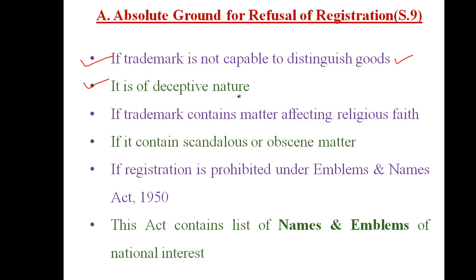A trademark should not confuse or deceive customers — customers should be capable of identifying the product they want to purchase. For example, 'Samsung' and 'Shanksang' — the minor spelling difference may mislead customers who cannot identify exactly which manufacturer they want to purchase from. Such trademarks with minor differences that cause confusion cannot be registered.